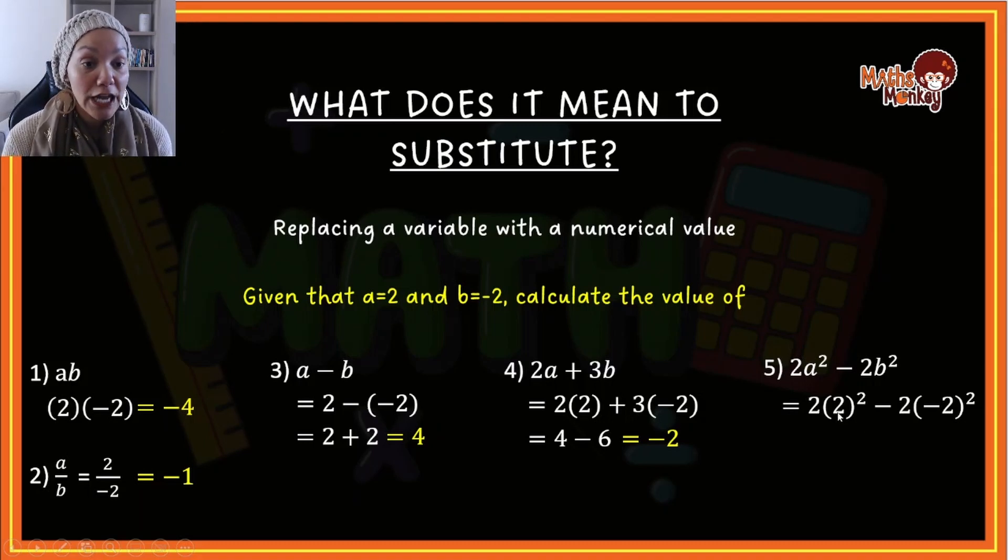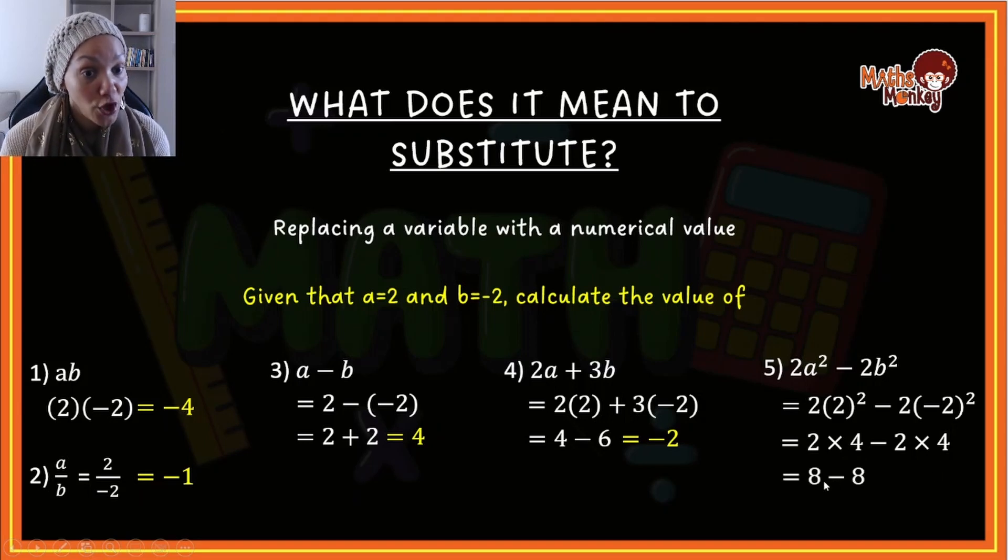We always do the brackets first, so we're going to get rid of this power. So this is 2 times 4 minus 2 times... now look, negative 2 squared means negative 2 times negative 2, which is positive 4 as well. So essentially we've got 2 times 4 minus 2 times 4, which gives me 8 minus 8, and your answer is 0.